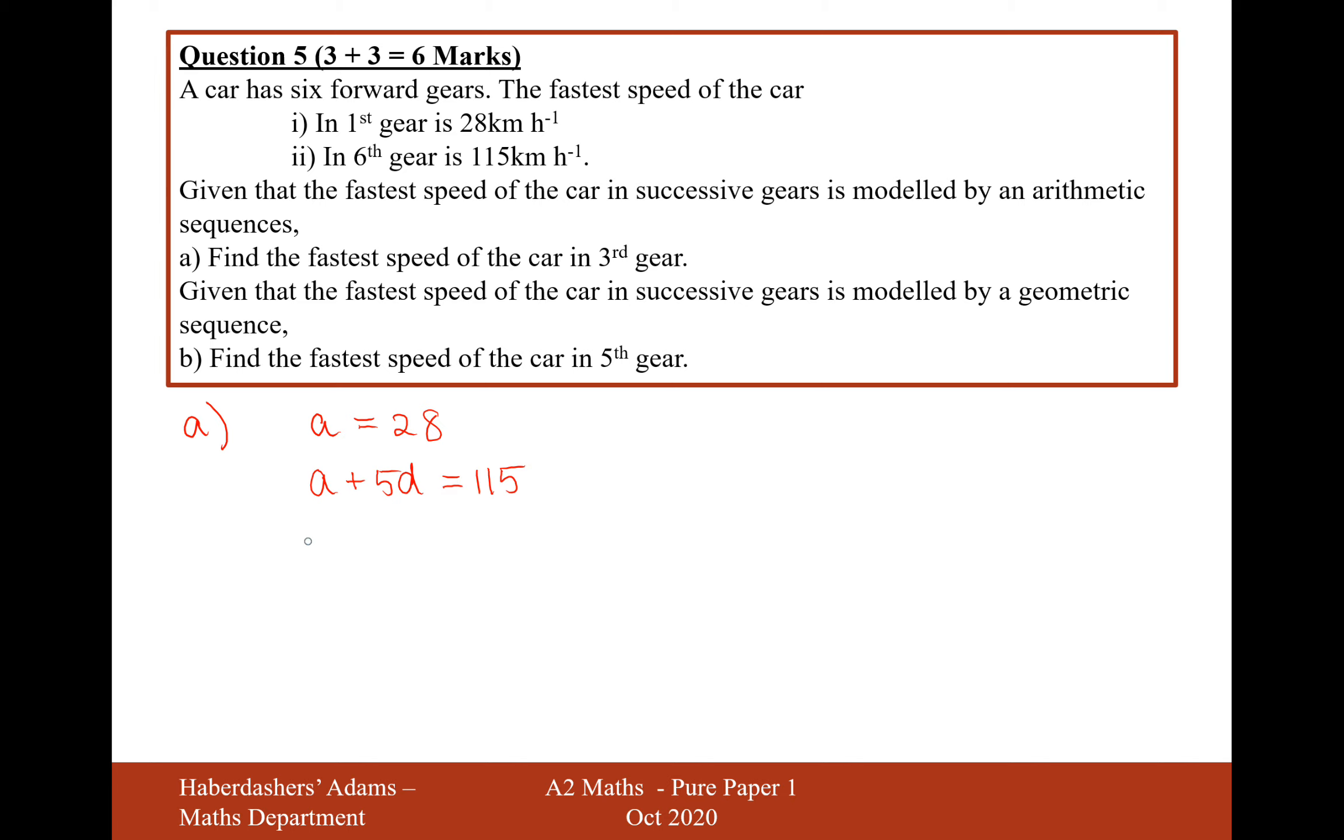So now that I know that A is 28, it's going to be 28 plus 5D equals 115, because remember it's always one less on the difference than the term you're currently at. So therefore 5D is going to equal 115 minus 28, which is 87, and then divide by 5, which is 87 over 5 or 17.4.